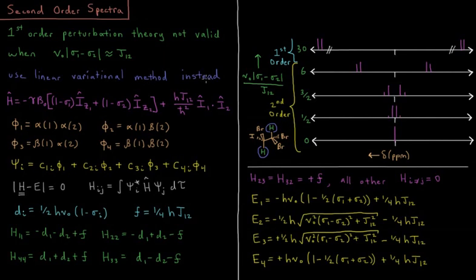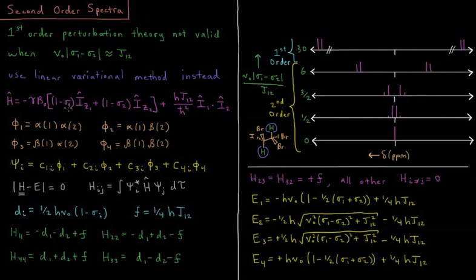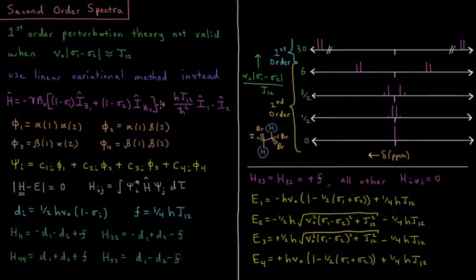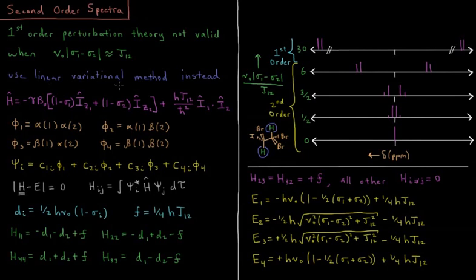Instead of first-order perturbation theory, we need to use the linear variational method. Our Hamiltonian is still the same — we have a magnetic Hamiltonian with the negative magnetogyric ratio of the proton times the magnetic field the spectrometer produces, times the quantity one minus the shielding constant of nucleus one times the z-component of the nuclear spin angular momentum operator on nucleus one, plus one minus the shielding constant of nucleus two times the z-component acting on nucleus two, plus the coupling term: Planck's constant times the coupling constant divided by h-bar squared times the dot product of the nuclear spin angular momentum operators on nucleus one and nucleus two.